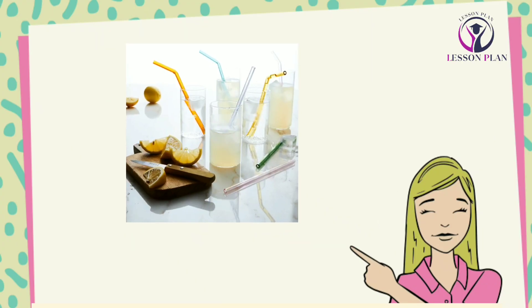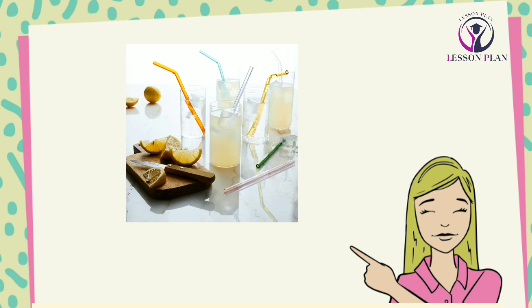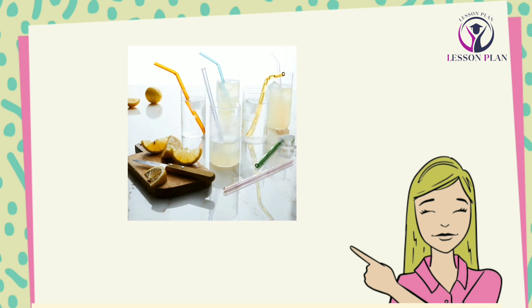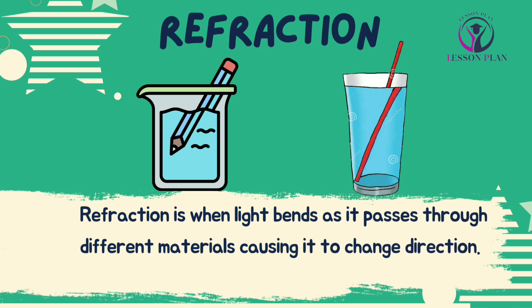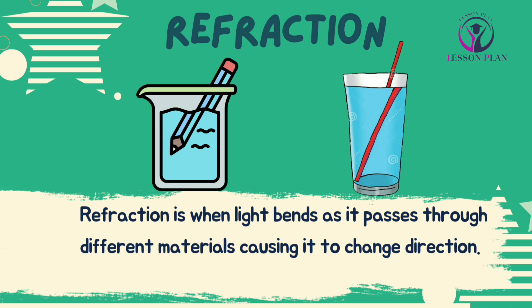Have you ever noticed how a straw in a glass of water looks bent, even though you know it's straight? That's an example of refraction. Refraction is when light bends as it passes through different materials. This happens because light travels at different speeds through different materials, causing it to change direction.